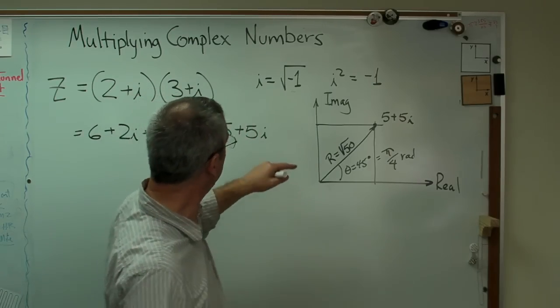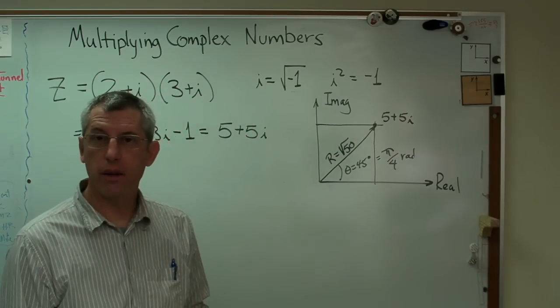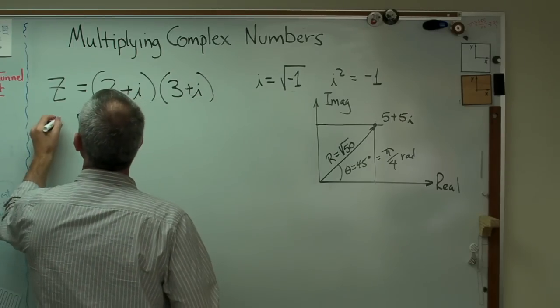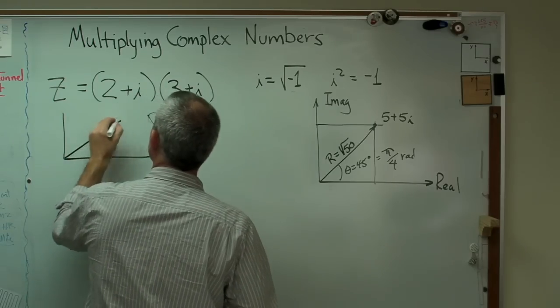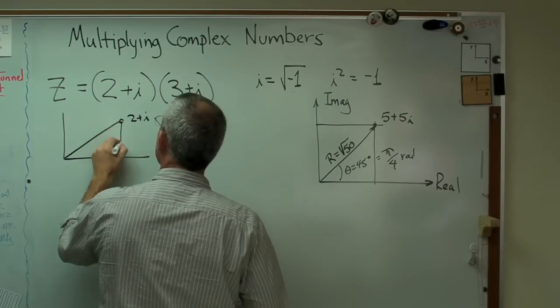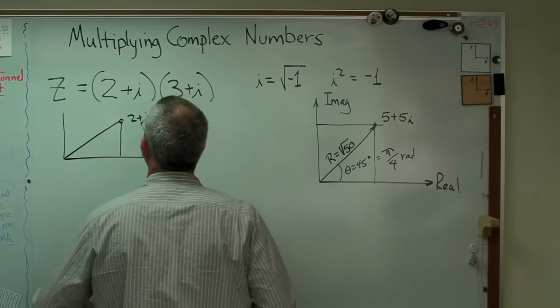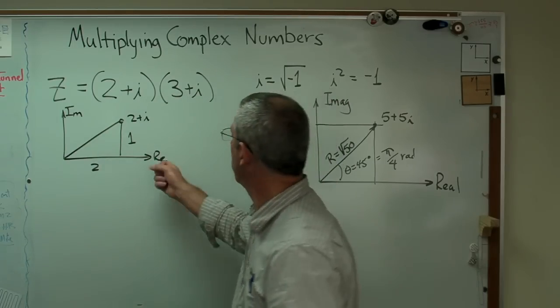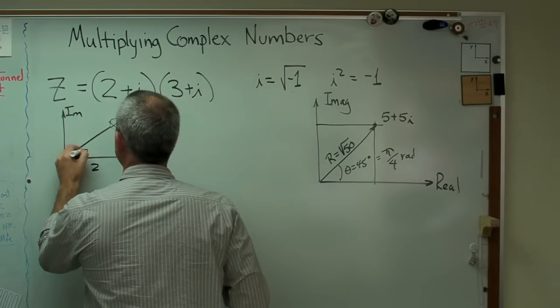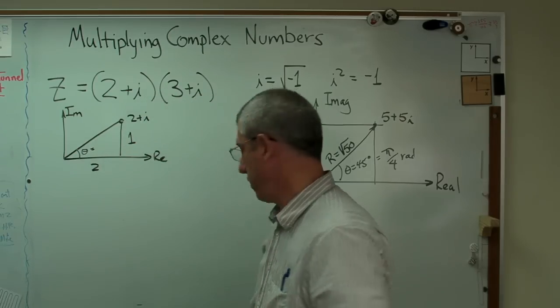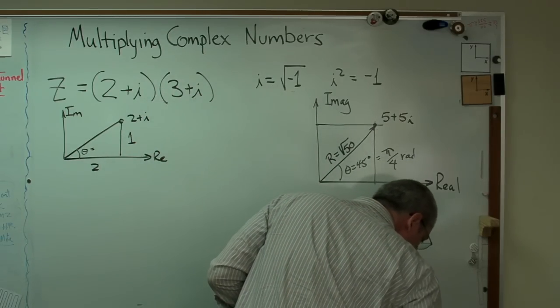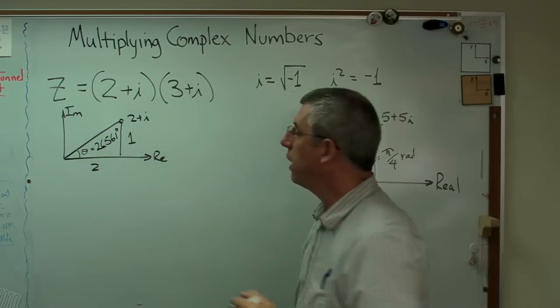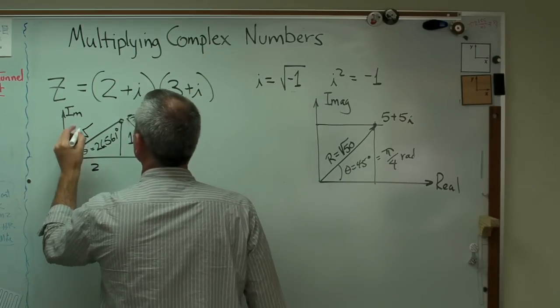That point is 5 plus 5i. So I've now got two ways to describe this number. One way is what you might consider rectangular kind of way. 5 that way and 5 that way, 5 plus 5i. And the other one is in polar coordinates. A radius of the square root of 50 at 45 degrees from the horizontal. Both are legitimate. I just multiplied two numbers using this rectangular notation. Let's try it again with polar notation. Let's take these two numbers and draw pictures of them.